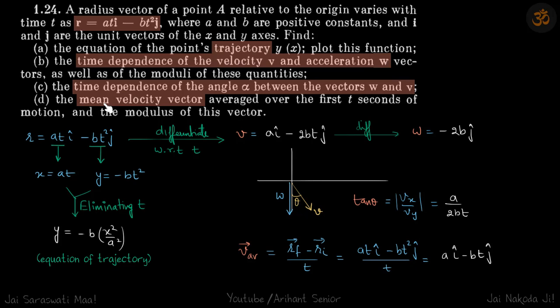Then third part and then finally mean velocity vector. So average velocity. It is final position minus initial position by time. So initial position at t equals 0 is 0, and final position is at i cap minus bt squared j cap by time. This gives the average velocity.